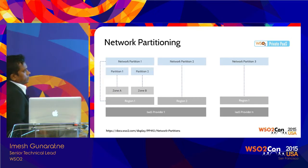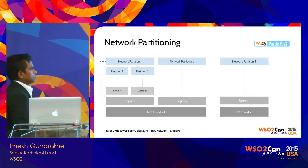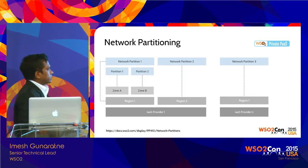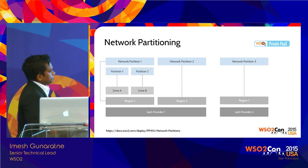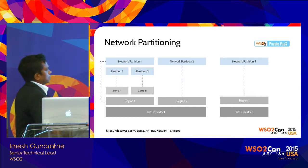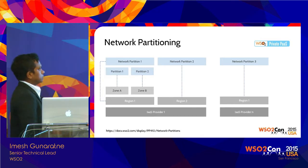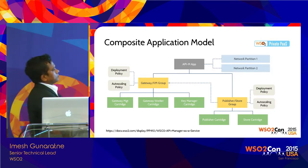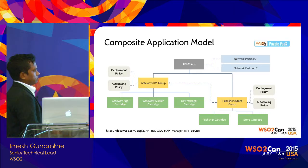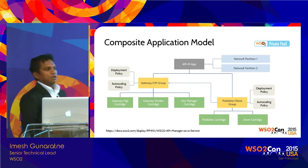We manage multi-cloud deployment using a concept called network partitioning. A network partition can have internal partitions, mapped either to a region or to an entire IaaS provider, while a partition could map to a zone. This configuration is deployed in Private PaaS and applied to the composite application. For example, for API Manager, you create a group specifying the cartridges underneath — a cartridge corresponds to a cluster when deployed, containing a Docker image, plugins, template modules, and configuration tools.